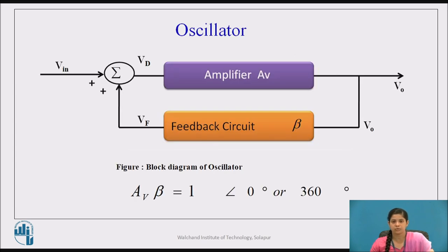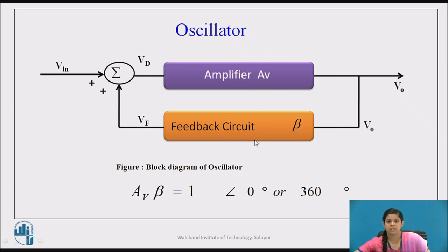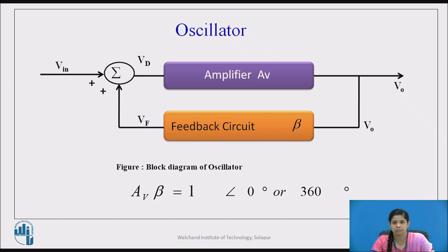Before moving towards the actual concept, we will revise the oscillator concept first. According to the previous lecture, the oscillator consists of two main blocks: first is the amplifier and second is the feedback circuit. To give sustained oscillation, the Barkhausen's criteria should be fulfilled, which has two conditions: the first condition is loop gain must be unity, and the second condition is the total phase shift around the circuit should be 0 degrees or 360 degrees.